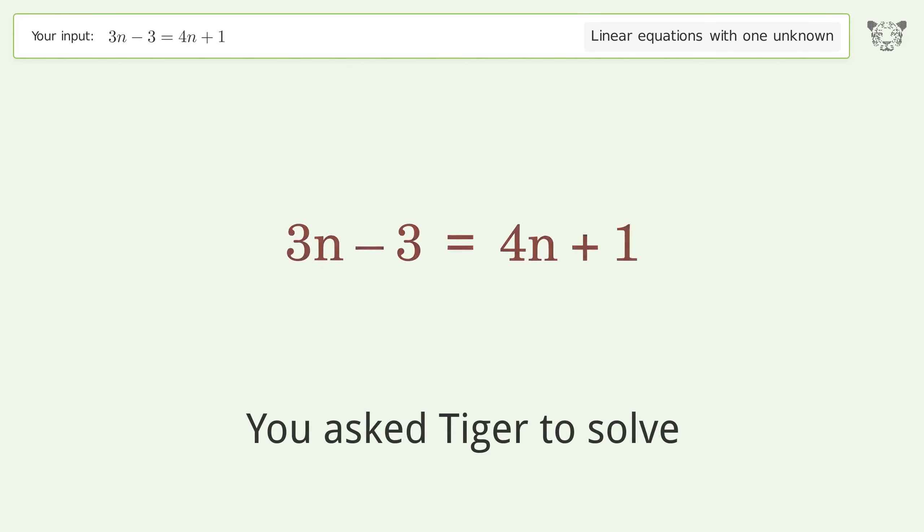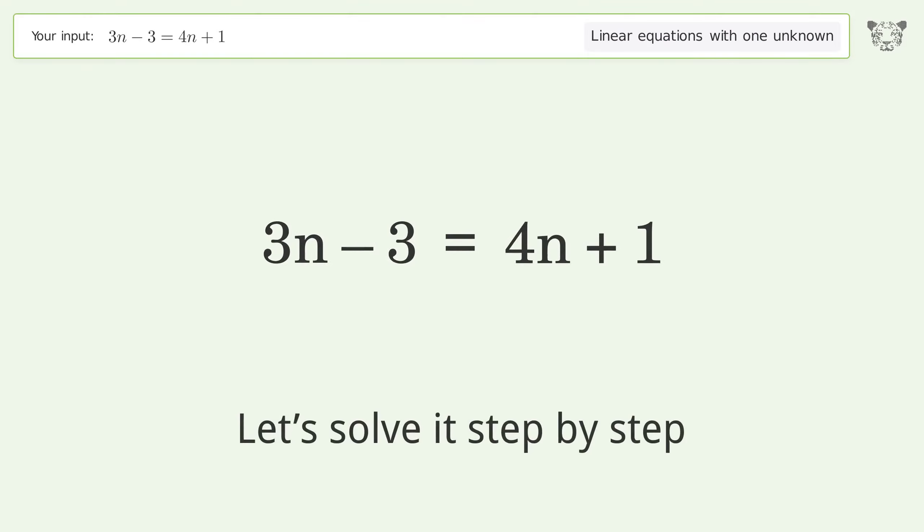You asked Tiger to solve. This deals with linear equations with one unknown. The final result is n equals negative 4. Let's solve it step by step.